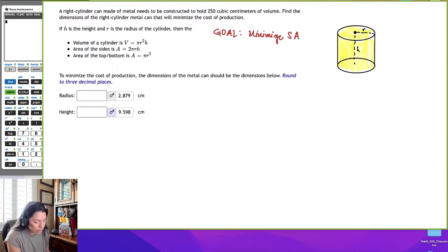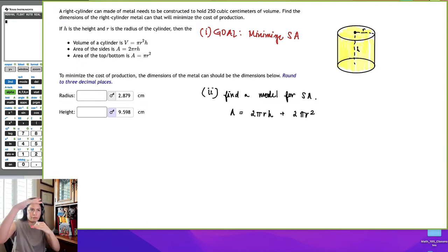So if our goal is to minimize surface area, then the first step would be - we have the goal here as number one. So number two, the next piece would be to come up with a model. So find a model for the surface area. Well, we kind of already know, so we can just say A is equal to 2πrh plus 2πr squared, right? Because we have a top and a bottom.